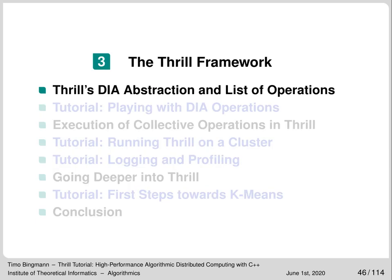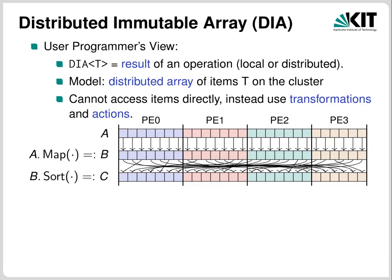And now, after this long introduction into parallel programming and its many challenges, let's dive into the high-layer programming interface of Thrill. This high-layer interface revolves around the concept of a DIA — a Distributed Immutable Array — which is a conceptual array of C++ items distributed transparently onto the cluster.